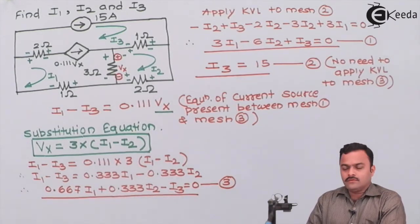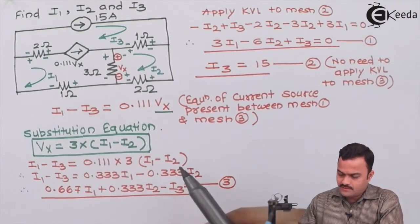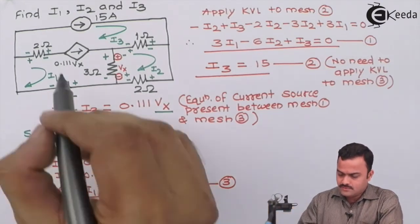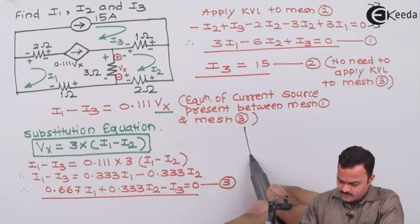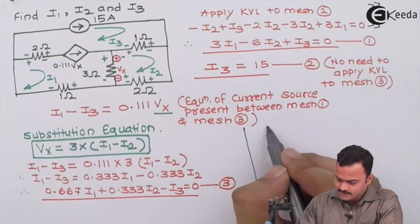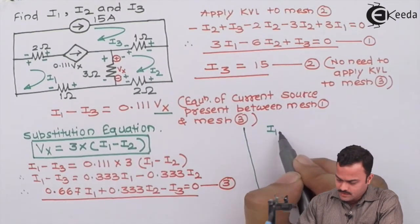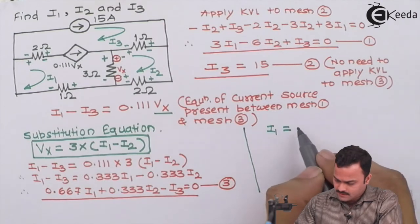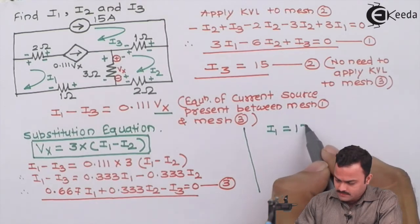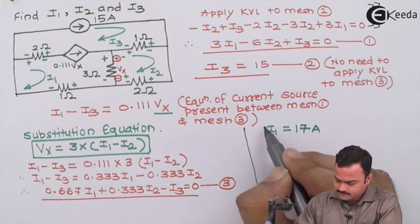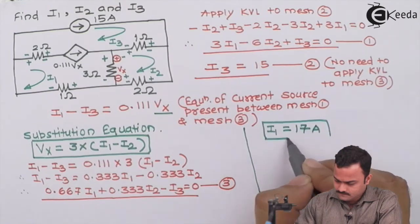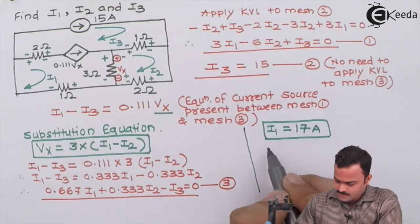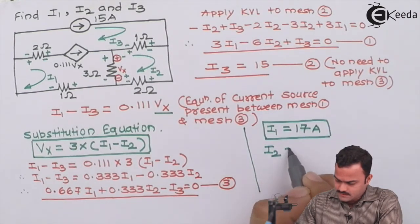We now have three equations with three unknowns. After solving equations one, two, and three, we get: i1 = 17 amperes and i2 = 11 amperes.